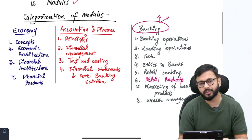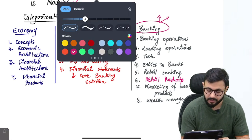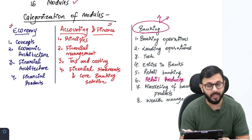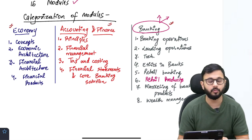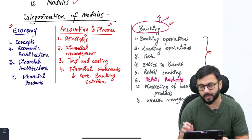Let us try and understand the categorization of all these modules. As I said, I have created a total of 3 subjects here: economy, accounting and finance, and banking. Banking is divided into further 2 subjects but I have combined these 2 and created a total of 8 modules.